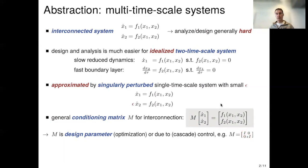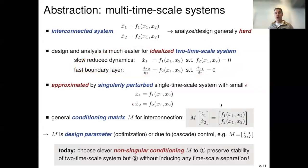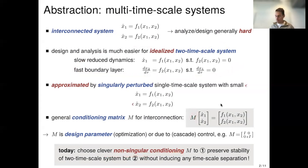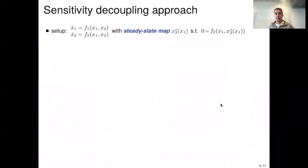What do we want to do today? We want to achieve the beneficial properties of the idealized two-timescale interconnection — which is easy to analyze — without doing the timescale separation. We don't like nested iterations in optimization algorithms, nor the conservativeness of two-timescale design in cascade control. So the goal is to choose a clever non-singular conditioning matrix M that preserves the stability of the two-timescale system, ending up with that simple analysis but without any timescale separation and without nested iterations.